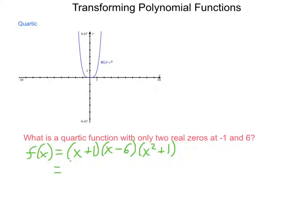So, multiplying these out, I'm going to get x squared minus 5x minus 6 times x squared plus 1. Then, doing my distribution strategically, I will come out with x to the fourth minus 5x cubed minus 5x minus 6. And this graph would have the characteristics of only having two real zeros, and is of a fourth degree polynomial, so it is quartic.